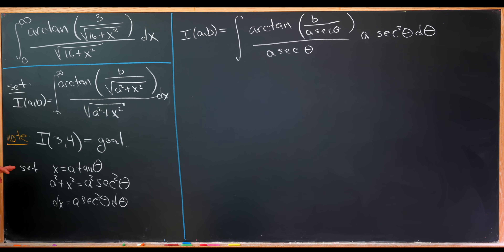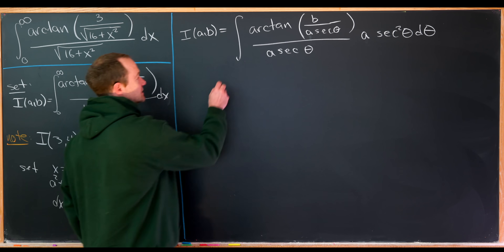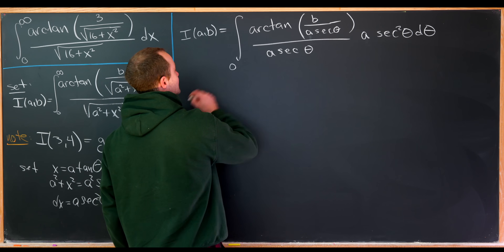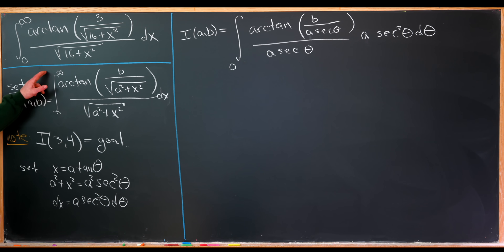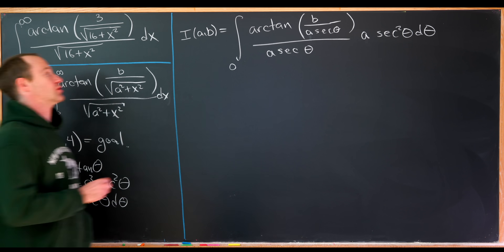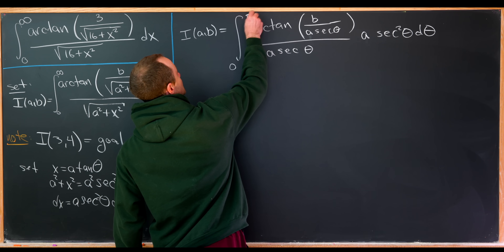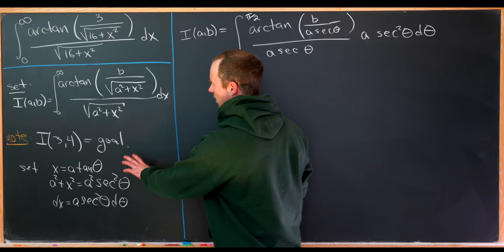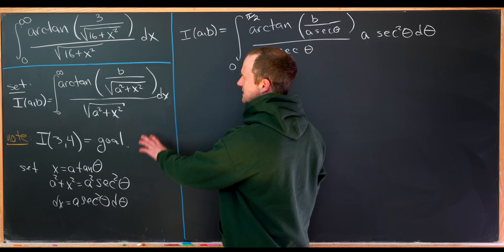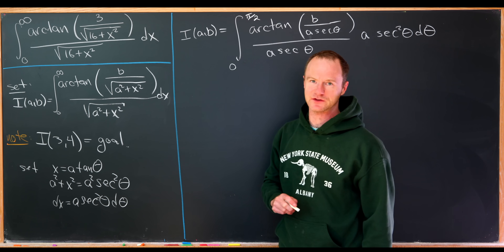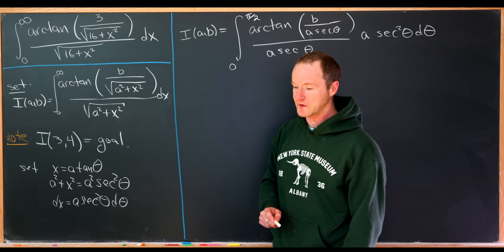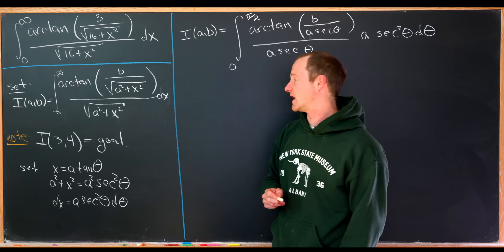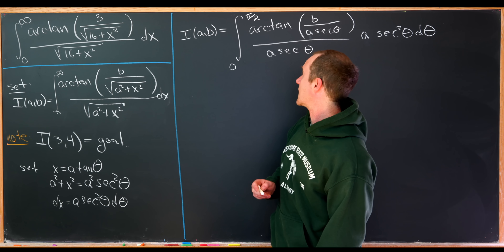When x equals zero, theta is also equal to zero, but as x approaches infinity, theta approaches pi over two. We're only parametrizing this for positive values of a and b.